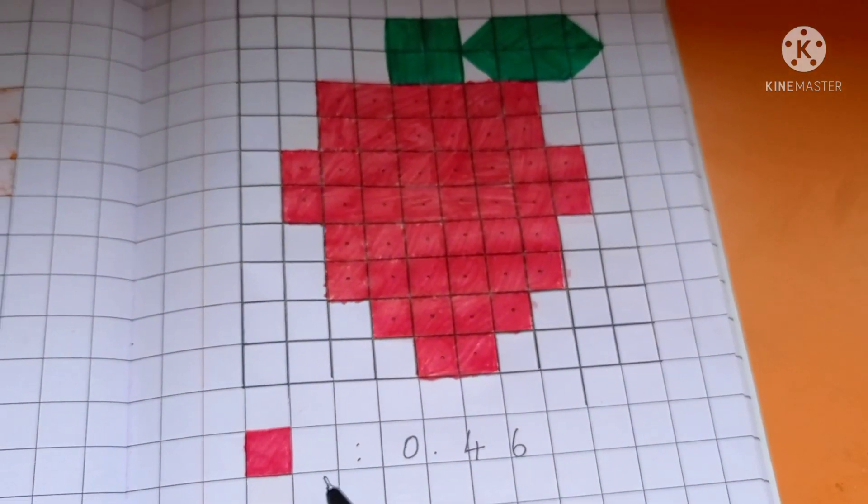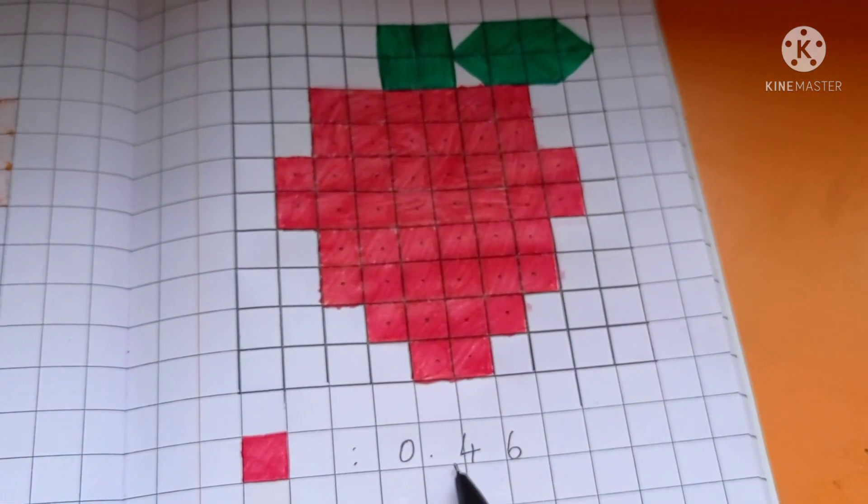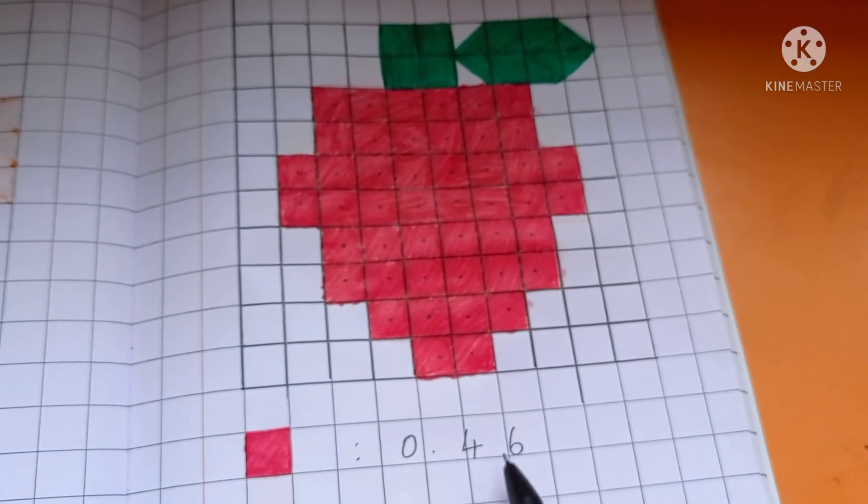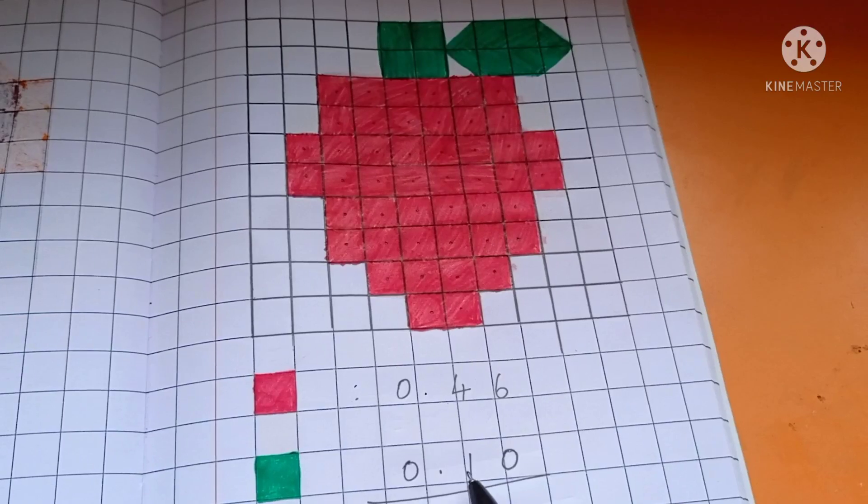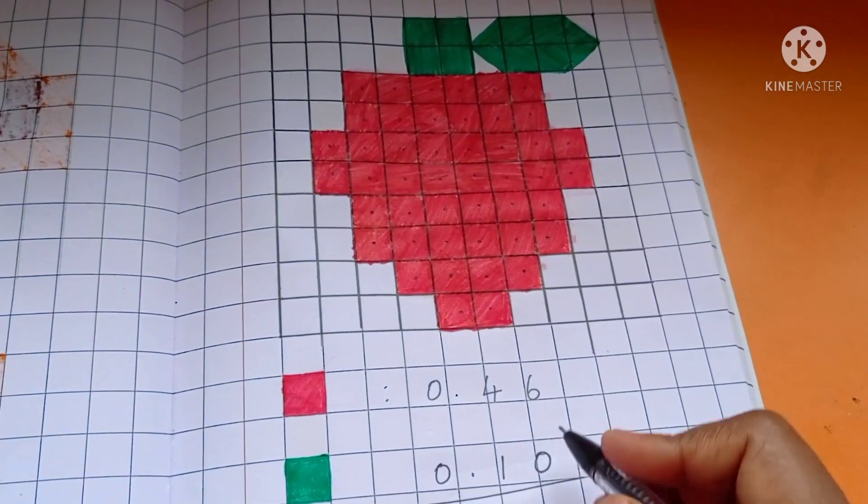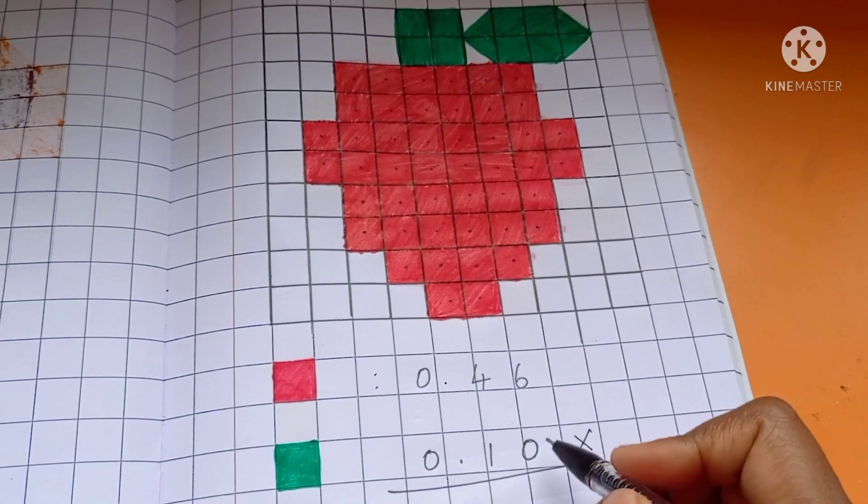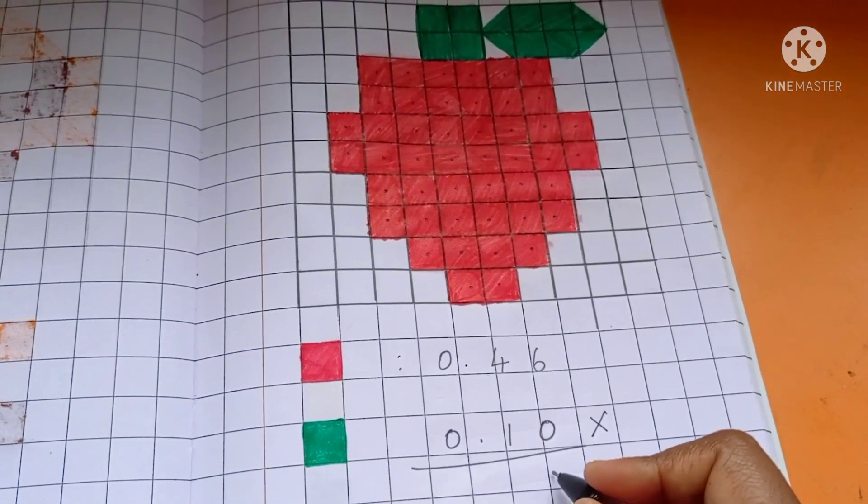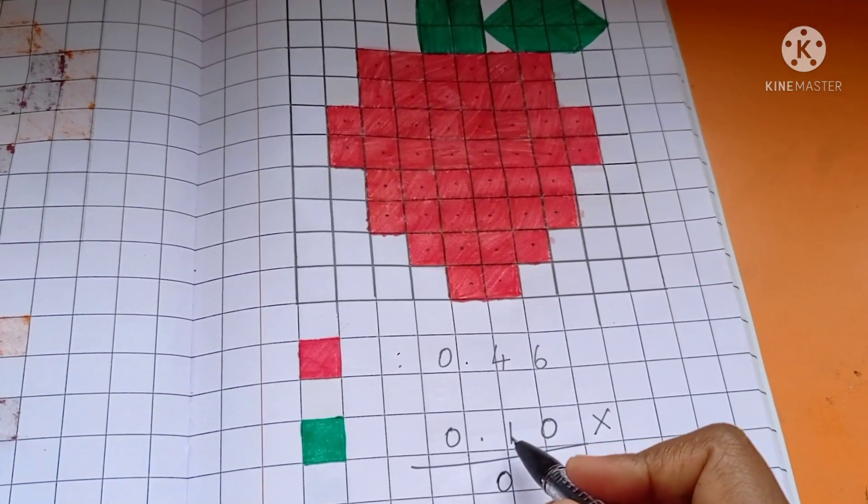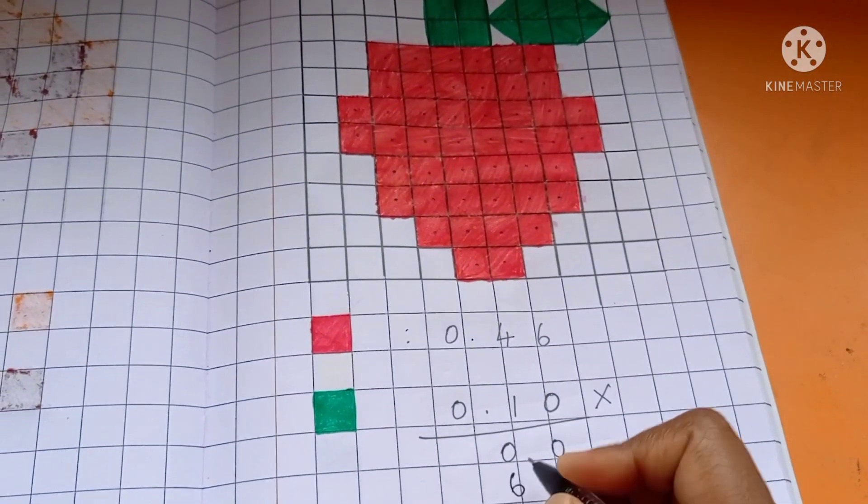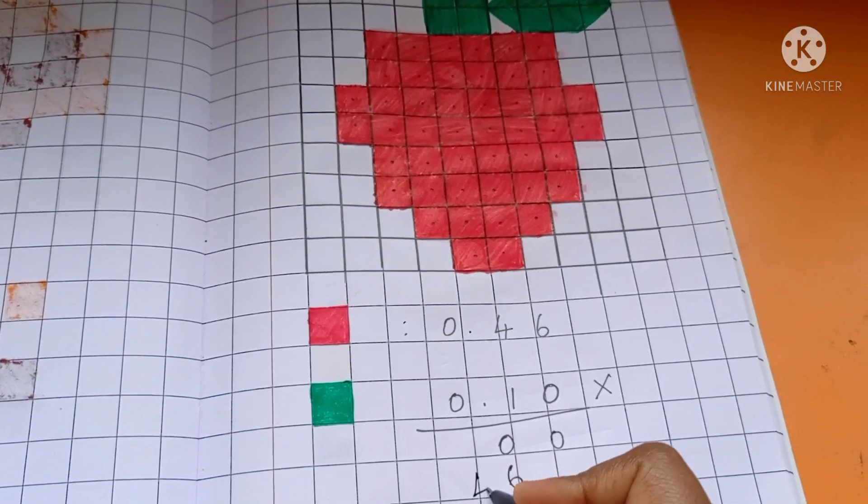So decimal 0.46 and number of green 10, 0.10. So if you multiply, 0.6 are 0, 004 are 0, 16 are 6, 14 are 4.